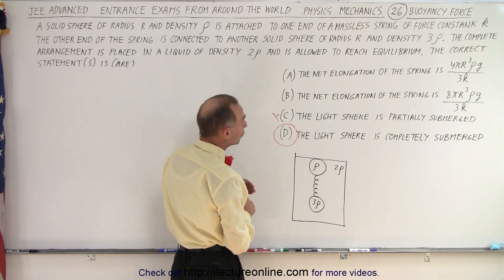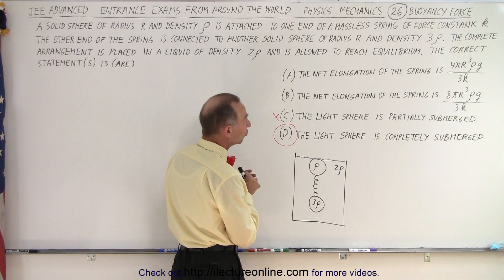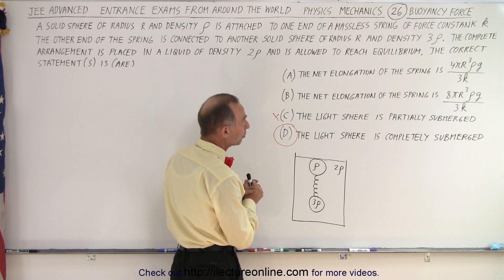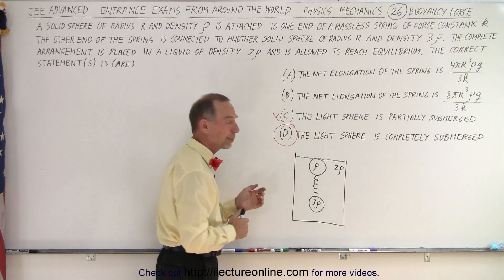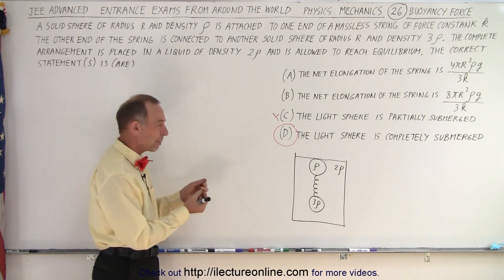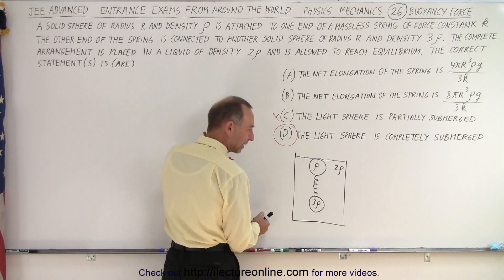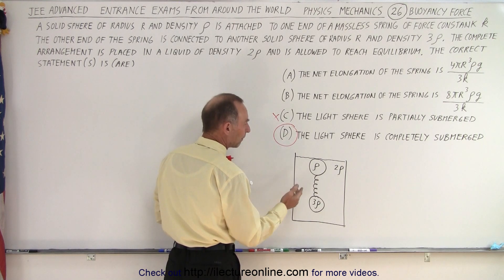But then what about the other two? The net elongation of the spring is 4 pi r cubed rho g over 3k or 8 pi r cubed rho g over 3k. And that of course depends upon the forces acting on here.